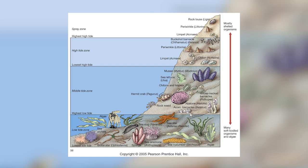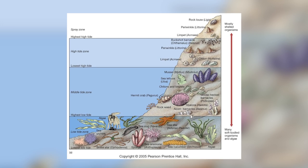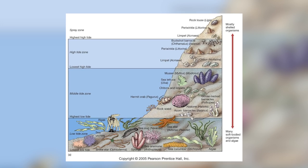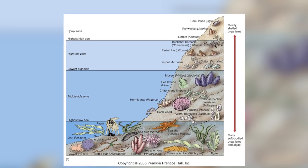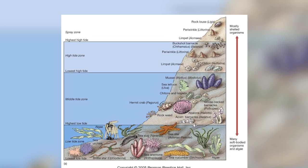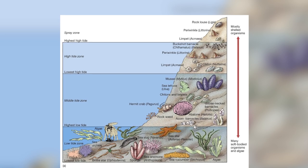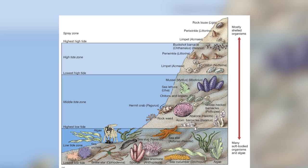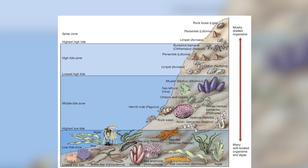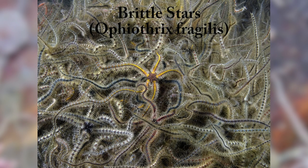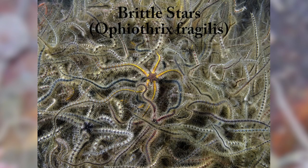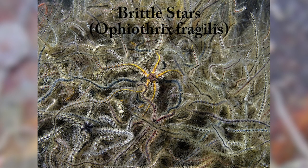The next zone is the high intertidal zone, which floods during the peaks of daily high tides but remains dry for long stretches between high tides. Here you will find animals such as limpets and brittle stars, and green seaweeds such as sea lettuce.